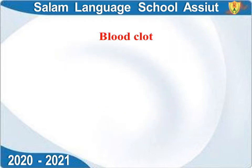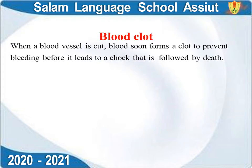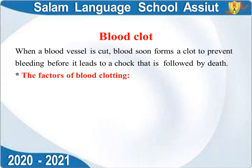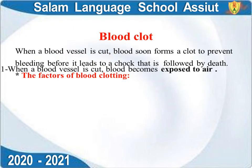Blood clotting (thrombosis) occurs when a blood vessel is cut. Blood soon forms a clot to prevent bleeding before it leads to shock and death. The body clots blood before significant hemorrhage can occur.